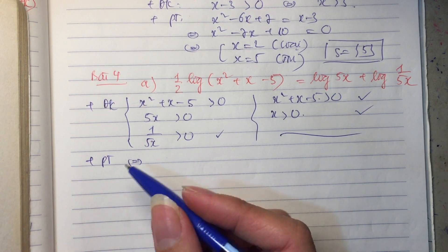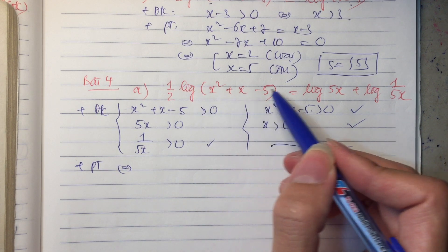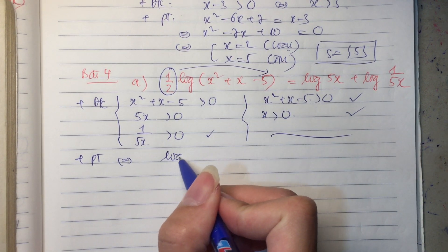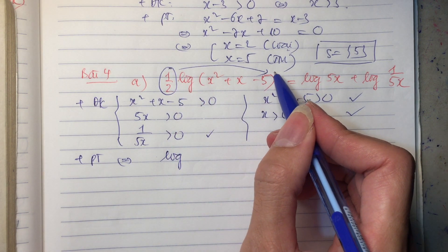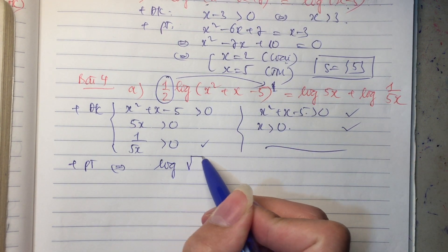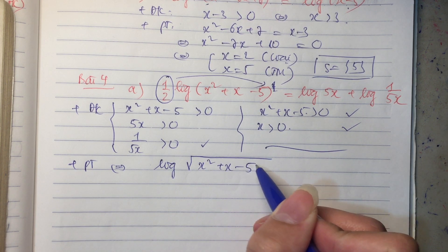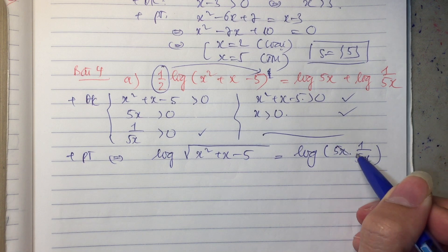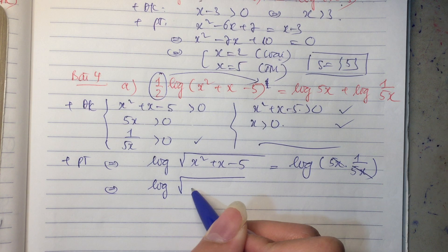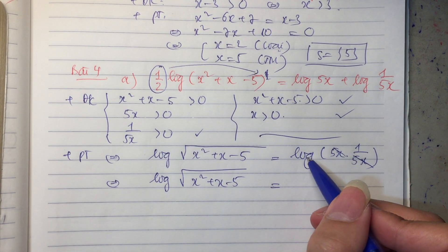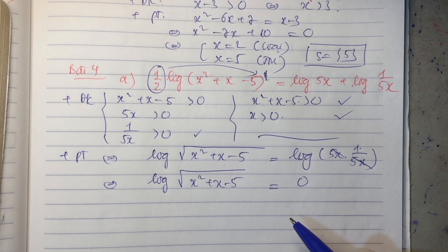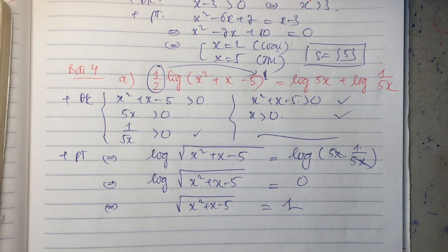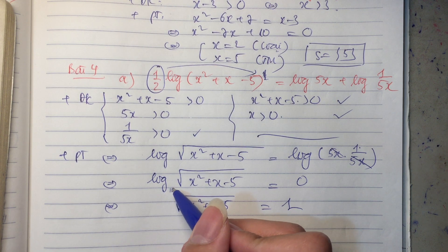Còn bên này là tổng của 2 logarit thì trở thành log của 1 tích, có nghĩa là 5x nhân với 1 trên 5x. Hai cái này rút gọn cho nhau, cuối cùng trở thành log cơ số 10 của căn(x bình phương cộng x trừ 5) bằng log cơ số 10 của 1, tức là bằng 0. Từ đấy dẫn ra: căn(x bình phương cộng x trừ 5) bằng 10 mũ 0 tức là phải bằng 1, vì chỉ có log của 1 bằng 0. Bình phương 2 vế lên: x bình phương cộng x trừ 5 bằng 1.